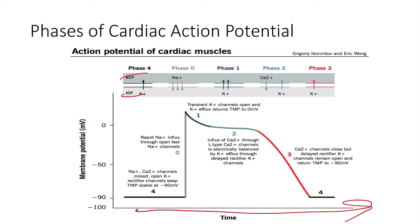We've got five key phases — phase zero through four — and they all have slightly different events that occur. Phase four is when the ionic concentrations are back to their normal baseline level and the potential is back to its normal resting potential, which is at negative 90 millivolts. We start the action potential at this phase, and then at the end, we go back to it.